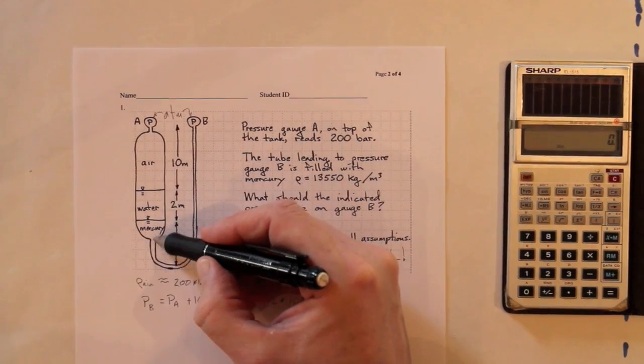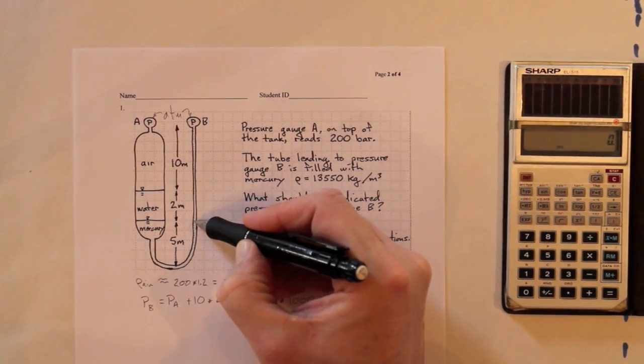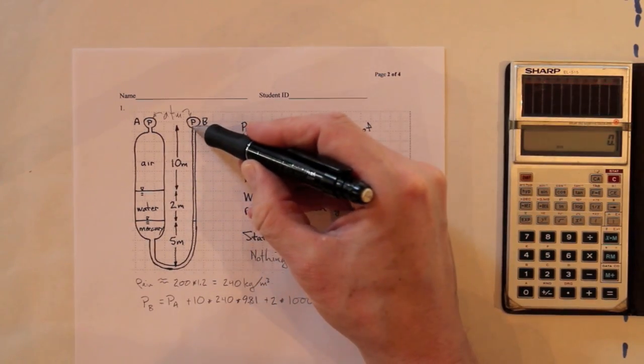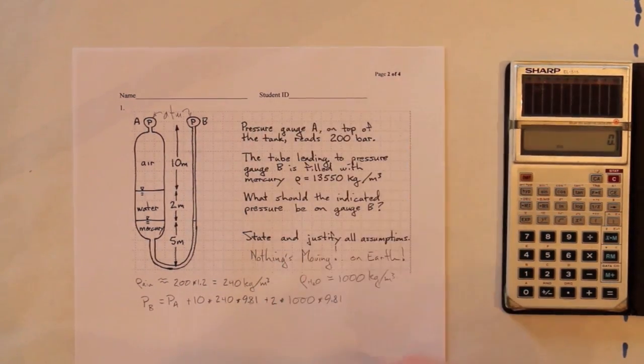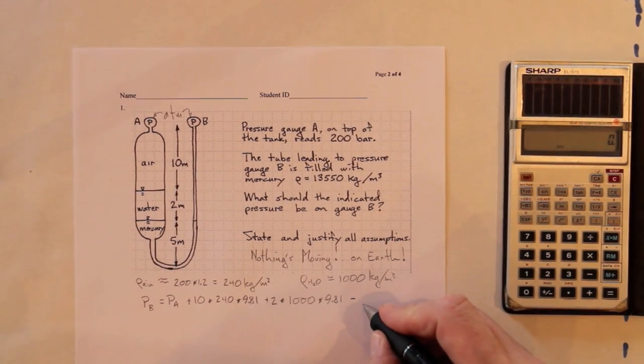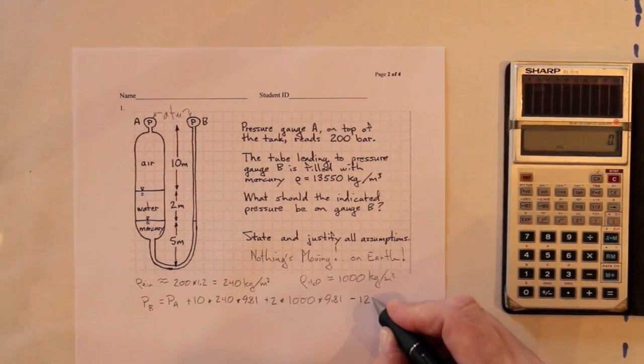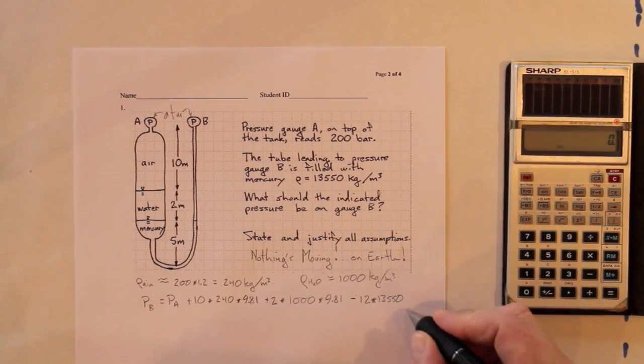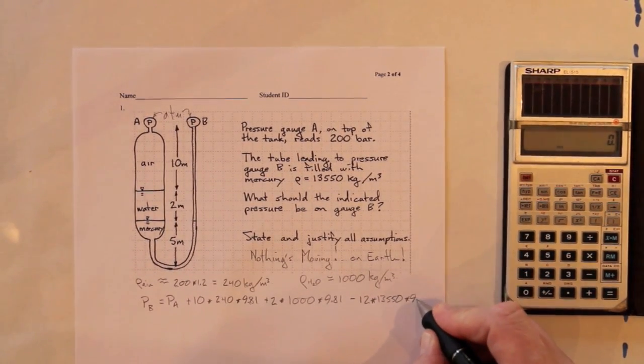Now, we get to the mercury. There's no change in pressure as we go around and back up to this height here. But then we're going to go up 12 meters to the pressure gauge at B. So, minus, because the pressure is going to go down, 12 meters times 13,550 times 9.81.